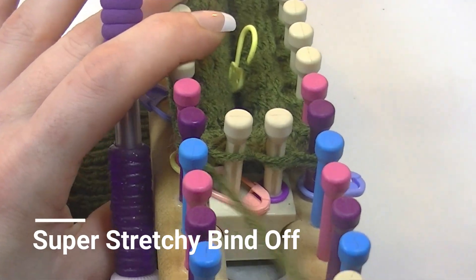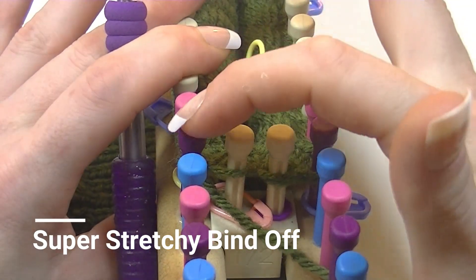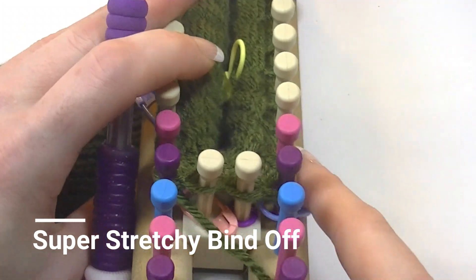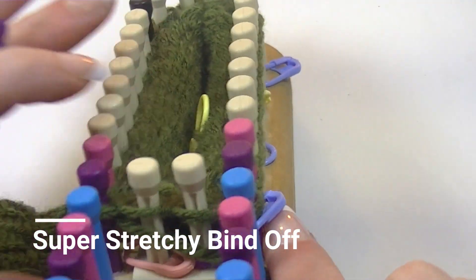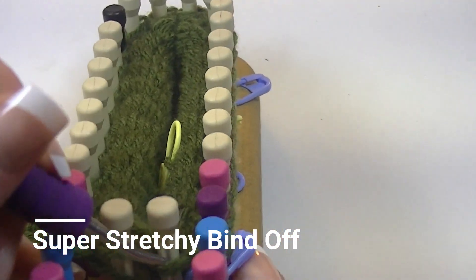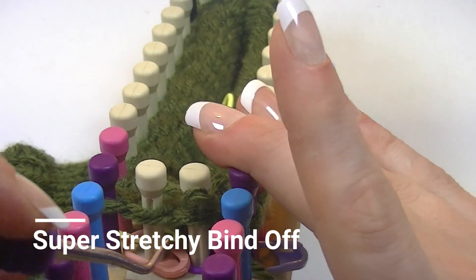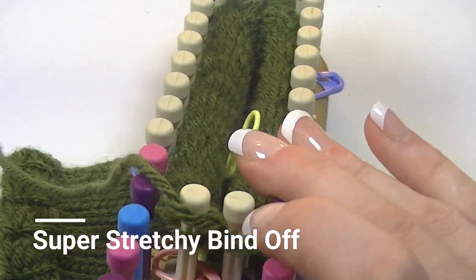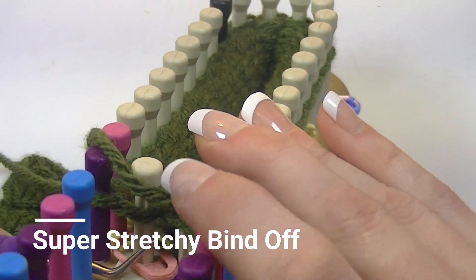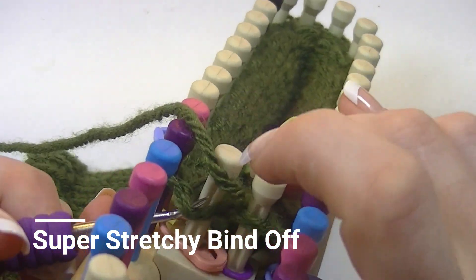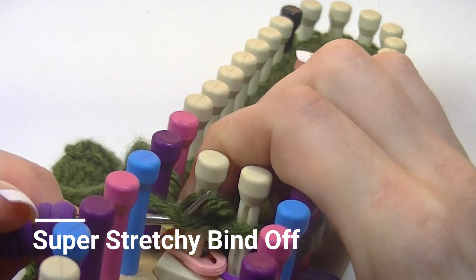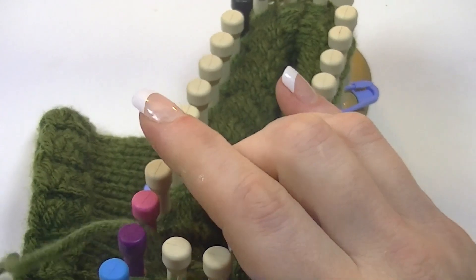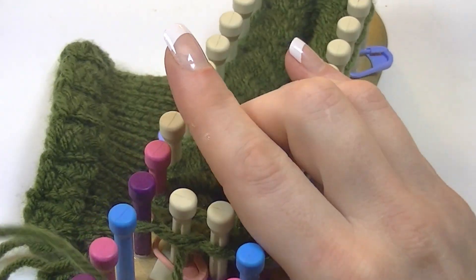We are back to our beginning. The working yarn is coming from this peg. So we are going to skip peg 01 and we are going to go ahead and work peg 02. And then go back and get peg 01 since there are two stitches on it right now. We only want there to be one. It's time to take it off the loom and see what we got.